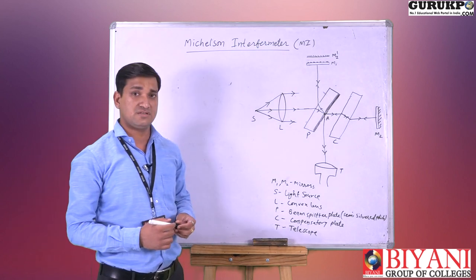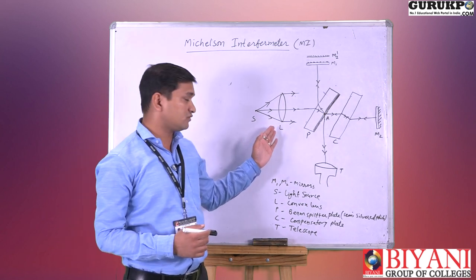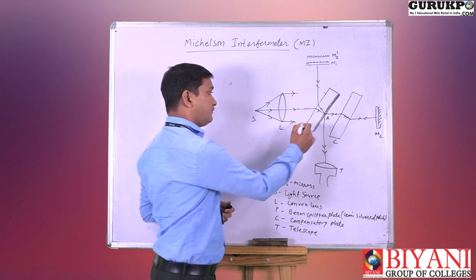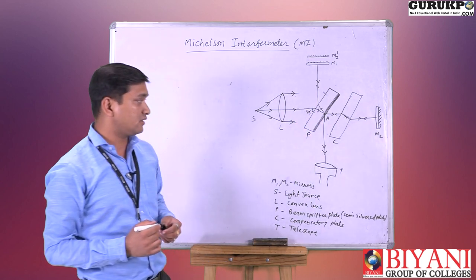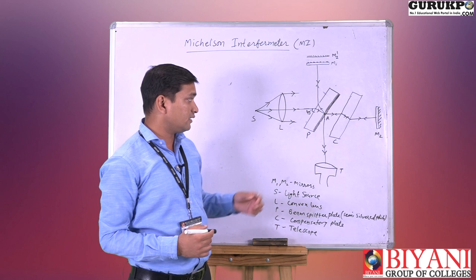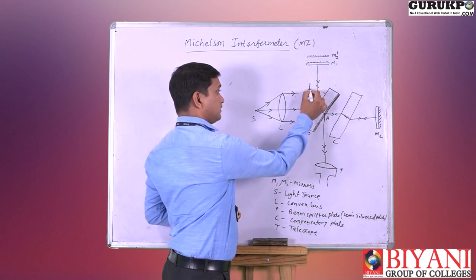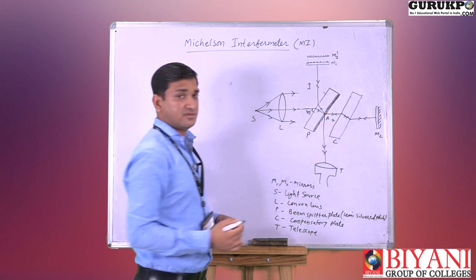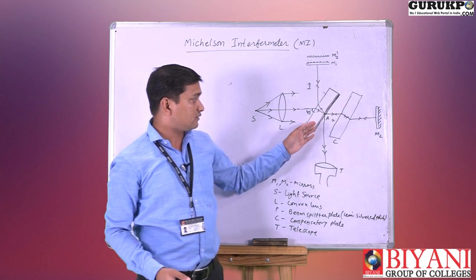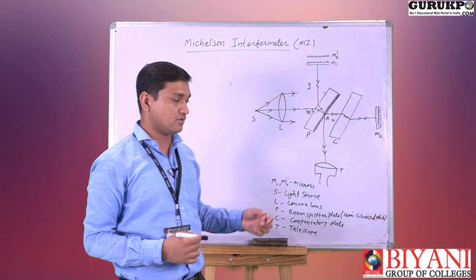Here is the diagram of the Michelson interferometer arrangement. A source of light is used, and in front of the source a convex lens is used to parallelize the light beam. A plate at around a 45-degree angle is placed, which is a semi-silvered glass plate. This plate works as a beam splitter plate. It divides the ray into two parts: one is the reflected part and the second is the transmitted part. These are the mirrors M1 and M2; reflecting from these mirrors, the rays meet at point A.